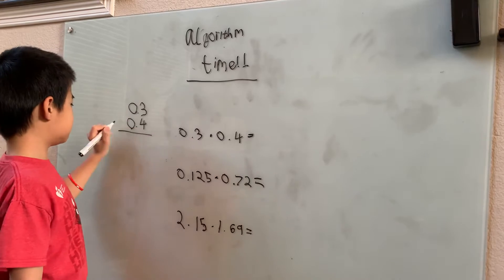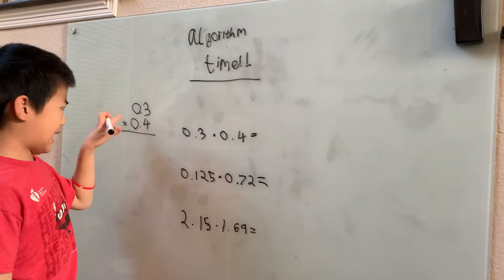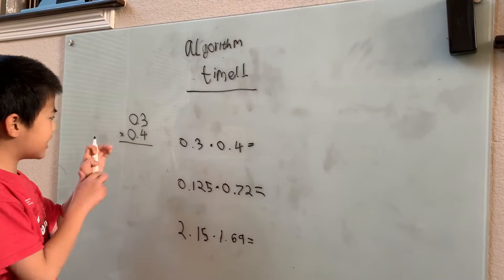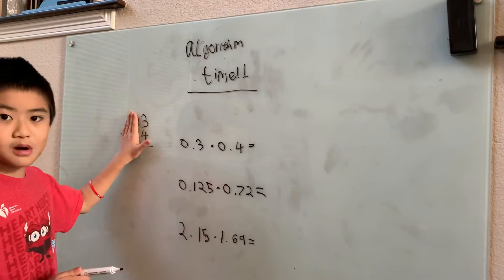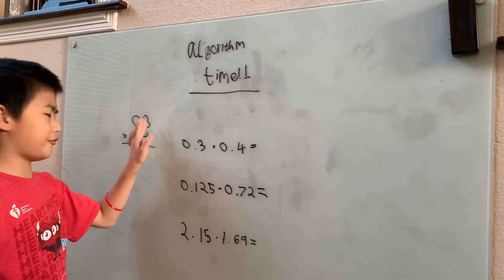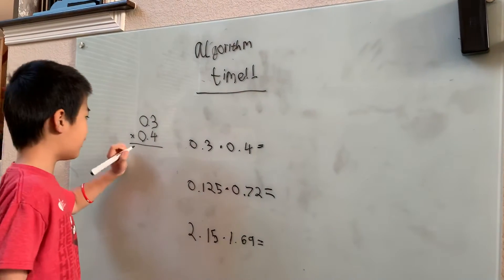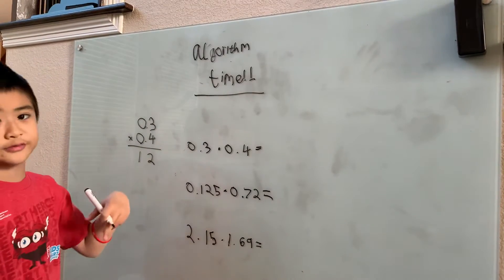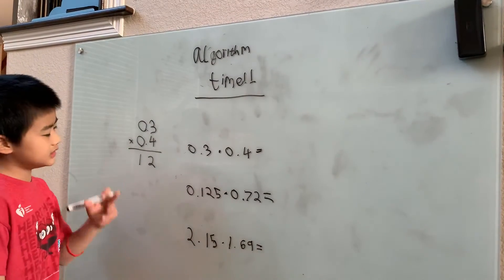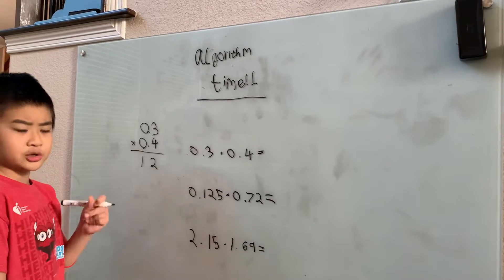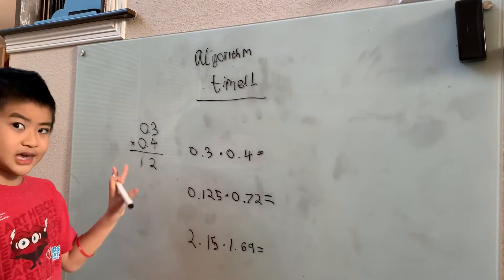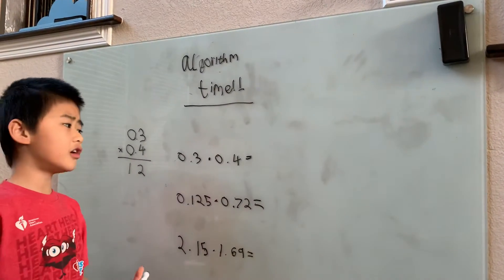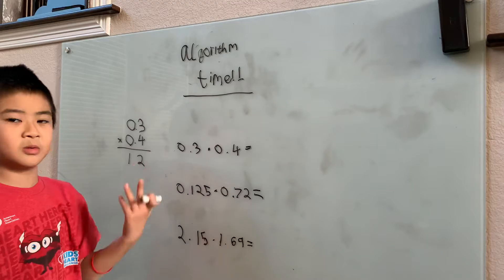We just line up the digits like this. I'm going to forget about the decimal points for a moment and just multiply the three and the four — that's just 12. But we don't want three times four, we want 0.3 times 0.4, so 12 is not going to be our answer. How do we determine what the answer is?